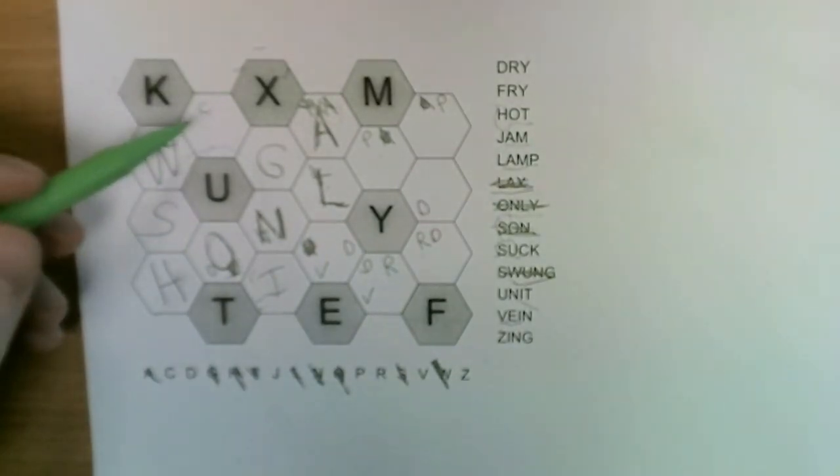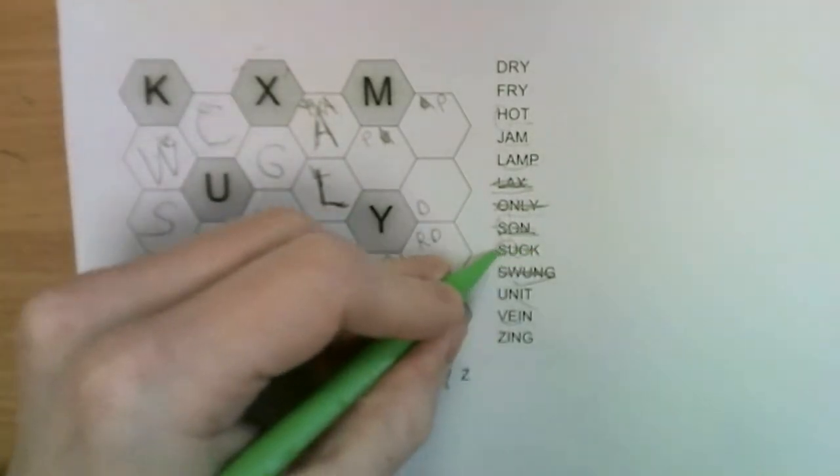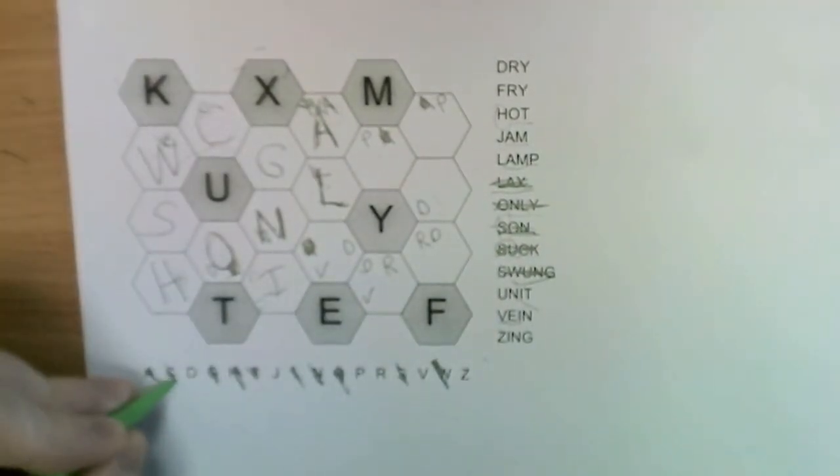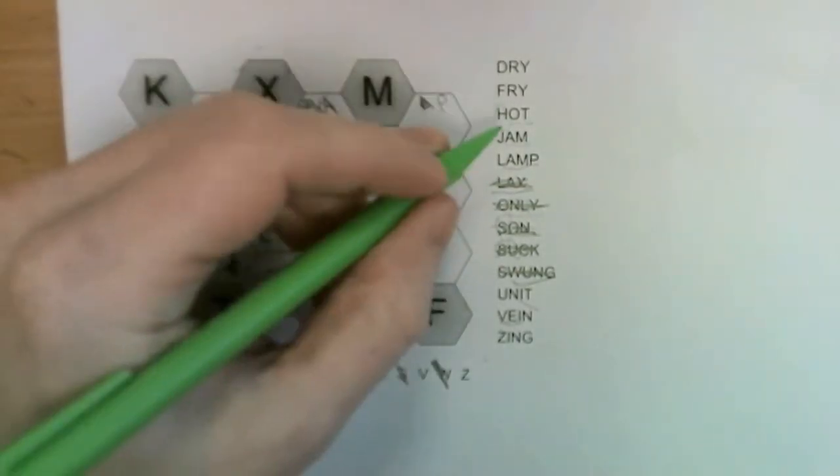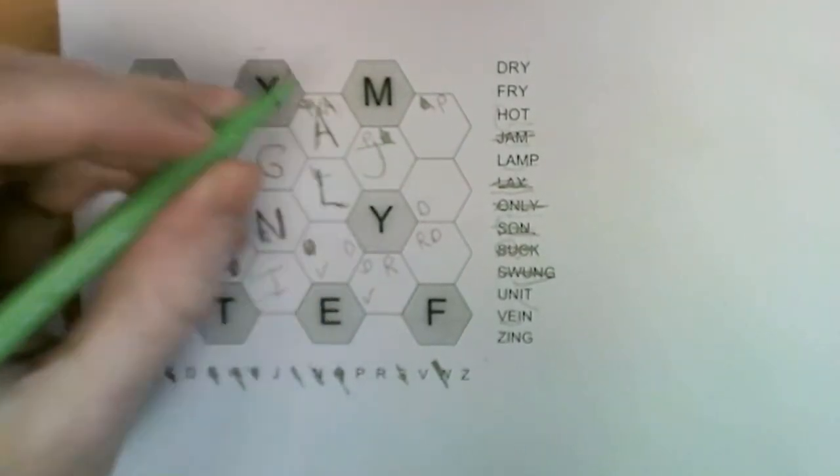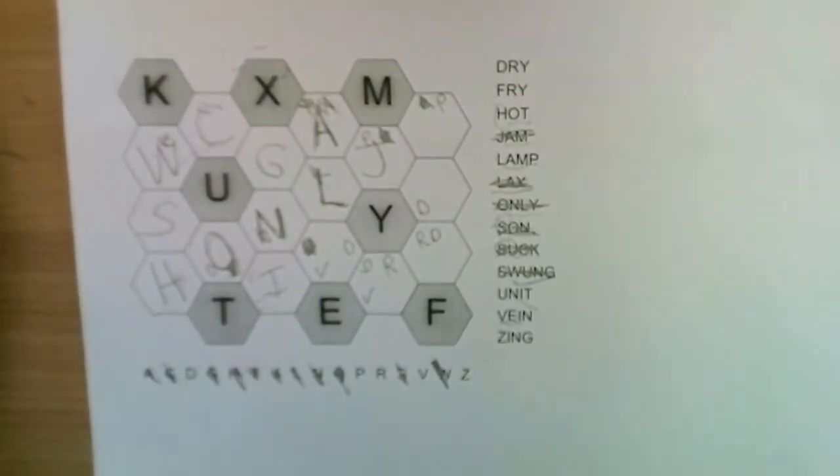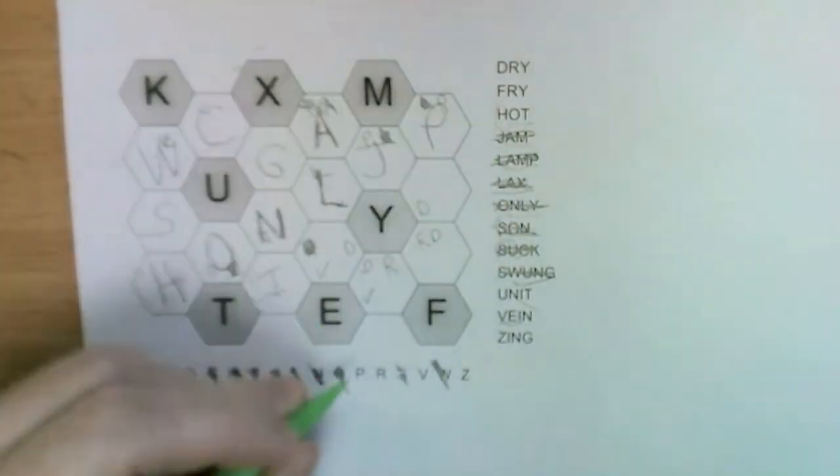This is going to be R-C to complete suck. Let's have a look at what we've got to place. We can see the A only has one available neighbor there. That's the jam. That now gives us our lamp, so that's the P.